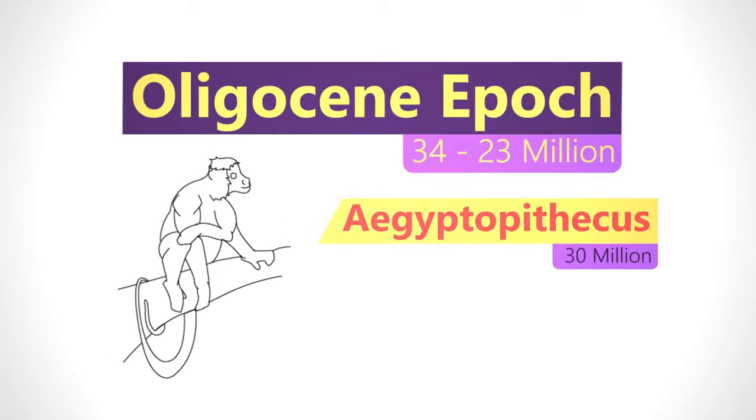Higher primates appeared during the Oligocene epoch, about 34 to 23 million years ago. This period saw the start of global cooling. Grasslands began to expand and forests shrank. Animals evolved to fit the new open landscapes, and many predator-prey species arose as a result.